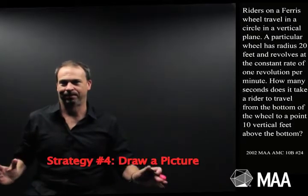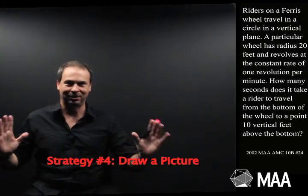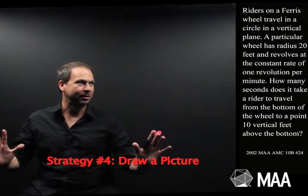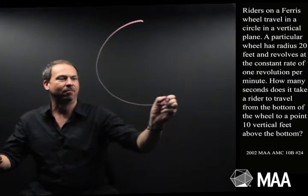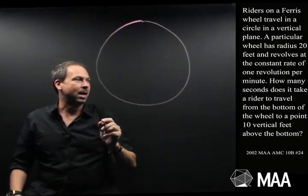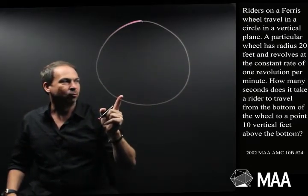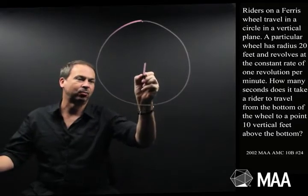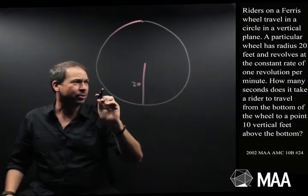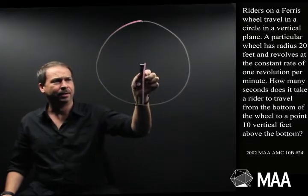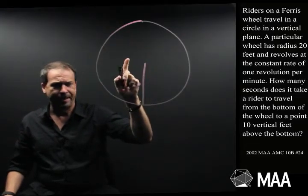Okay, well clearly I'm going to have to draw a picture. Strategy number four, draw a picture, let's do it. So riders on a Ferris wheel travel in a circle in a vertical plane. Yep, a great big round circle. They go around. A particular wheel has radius 20 feet. I'm also drawing a radius, 20 feet. And it revolves at a constant rate of one revolution per minute. So 60 seconds, it goes all the way around. Got that.